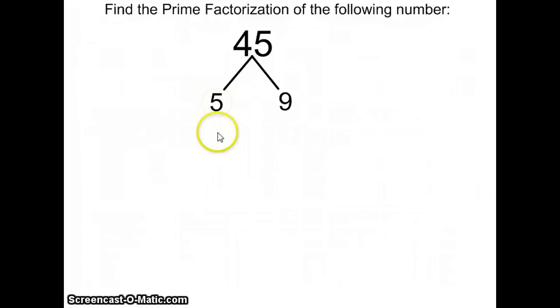I know from my work in investigation 1 that 5 is a prime number because the only factors it has are 1 and 5. So I'm going to go ahead and circle it.